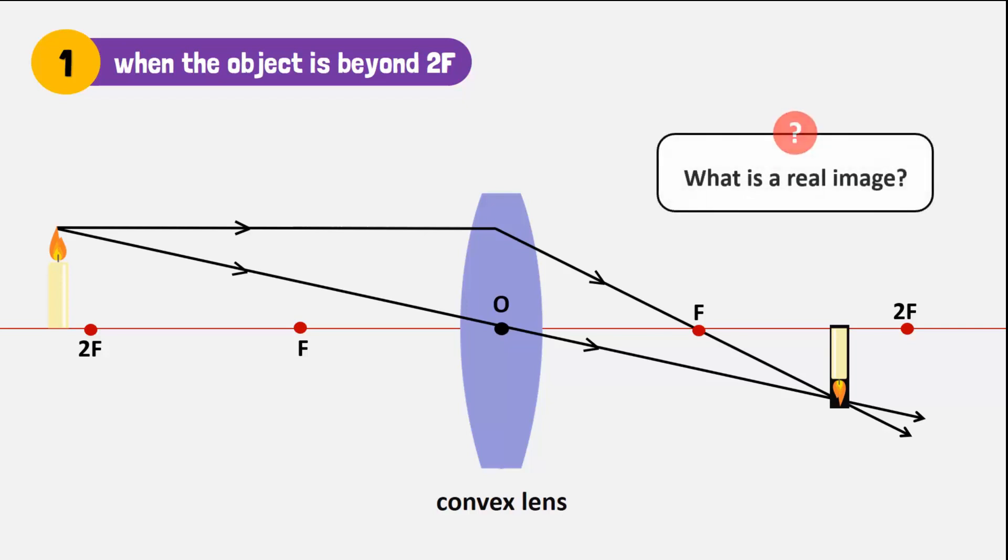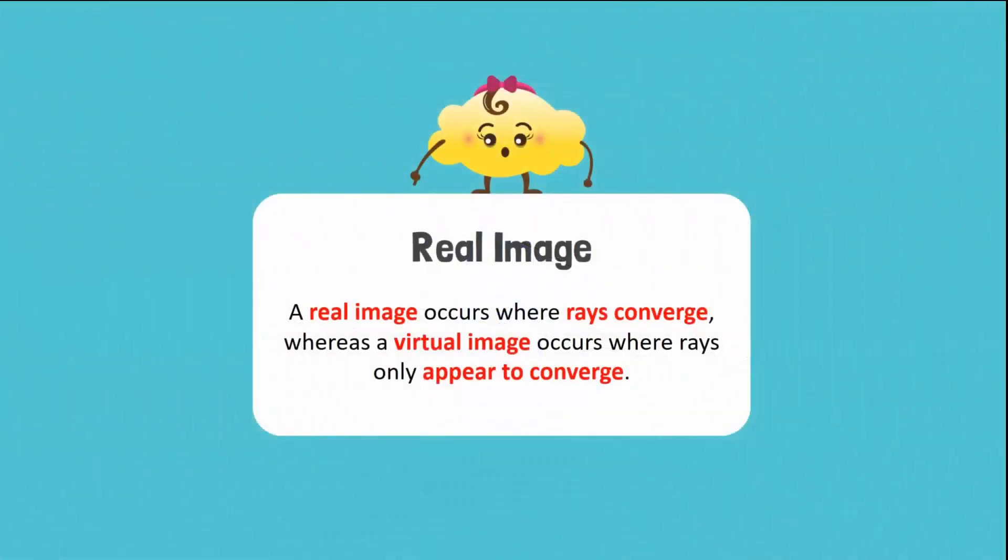But what is a real image? A real image occurs where rays converge, whereas a virtual image occurs where rays only appear to converge.